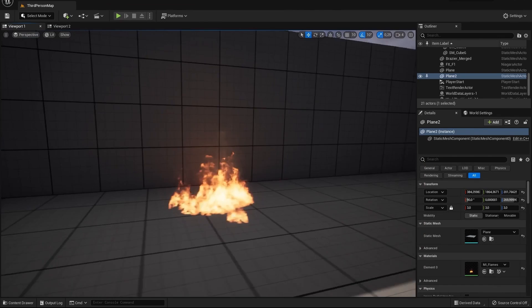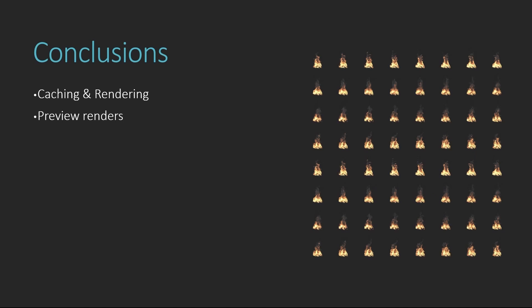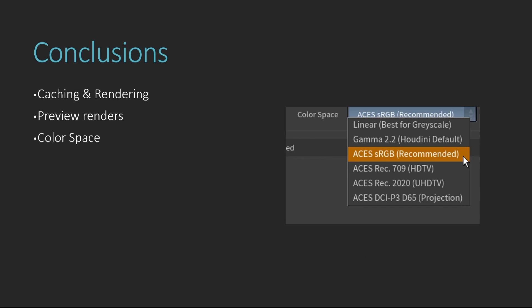A few things to keep in mind: caching and rendering time. If you set the voxel size very low with high-quality simulations, caching and rendering can take very long. Do preview renders if you're unsure about rows, columns, or resolution — only render the color maps first to see if things work out. Also keep color spaces in mind — we used Houdini's default gamma 2.2. If you use ACES, make sure it's installed, as different color spaces give different results.